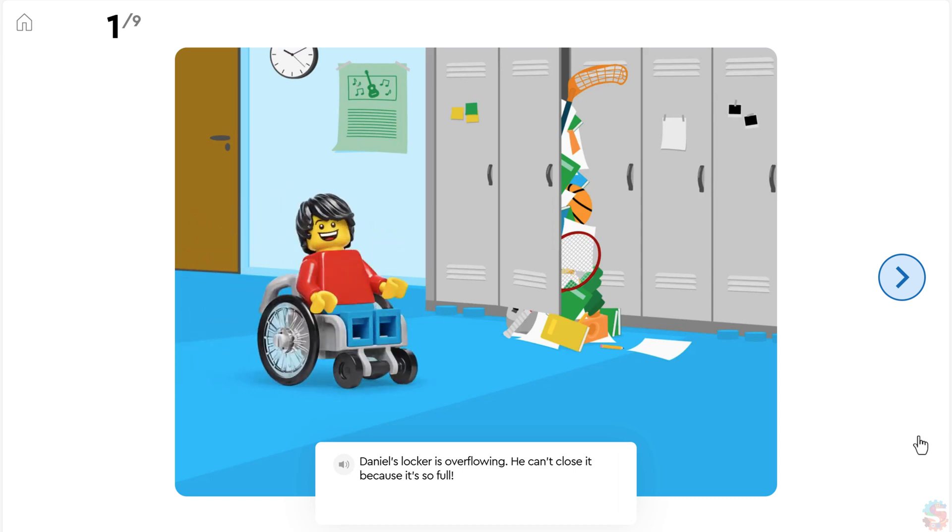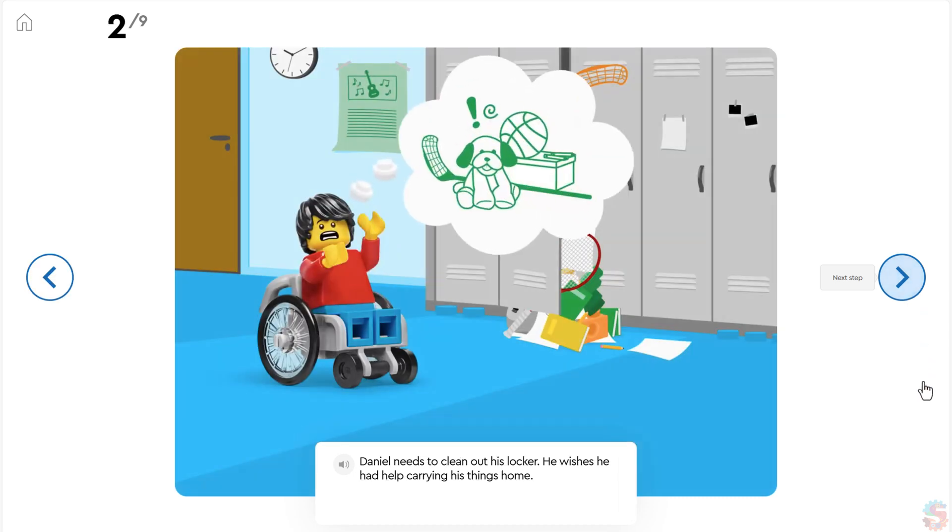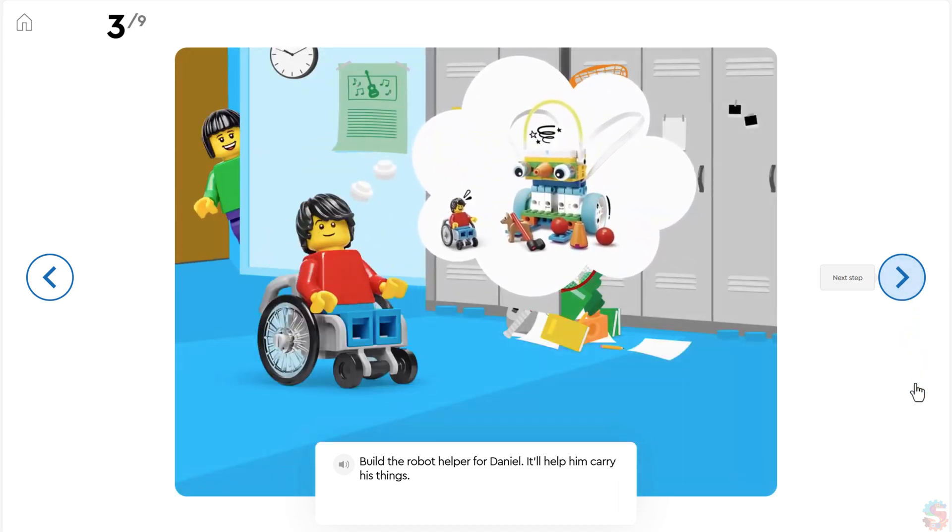Daniel's locker is overflowing. He can't close it because it's so full. Daniel needs to clean out his locker. He wishes he had help carrying his things home. Build this robot helper for Daniel. It's going to help him carry his things.